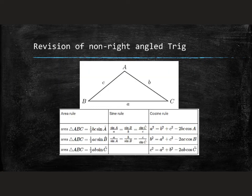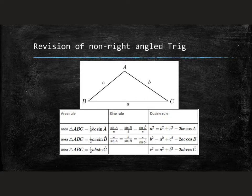Let's go through a quick revision of non-right angle trig. As you would remember, not all triangles are right angle triangles. Our trigonometry originally needed us to reference against the 90-degree triangle so we could find a hypotenuse. When we have triangles that don't have a hypotenuse, we have to use one of three rules: the area rule, the sine rule, and the cosine rule.